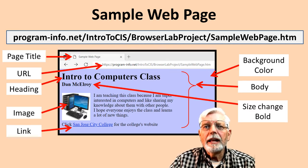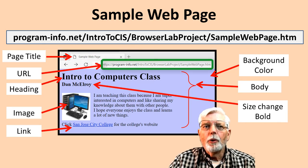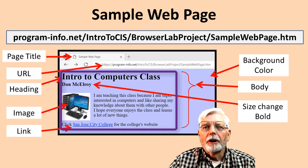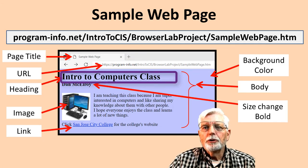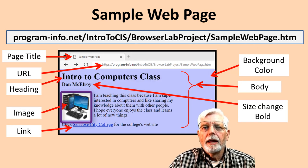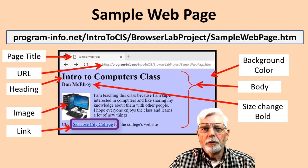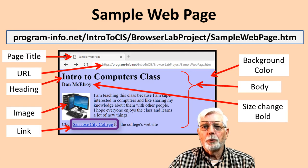Here is a web page on program-info.net. When we look closely at the web page, we see the title is displayed in the operating system's window tab. The URL is in the web browser's address bar. The contents of the web page is placed in its body. It is using a heading level 1 at the top of the page. An image is placed on the web page along with a lot of text. A link to the San Jose City College webpage is near the bottom of this web page.